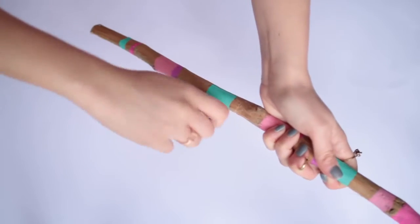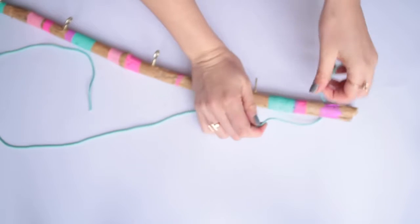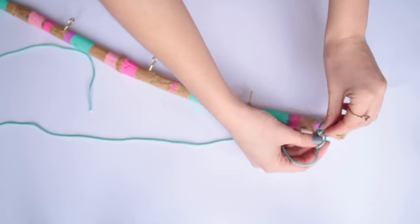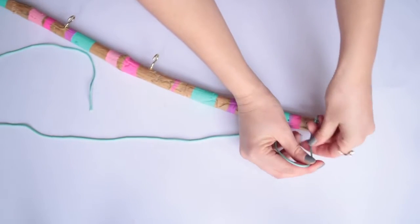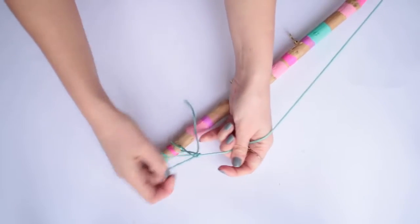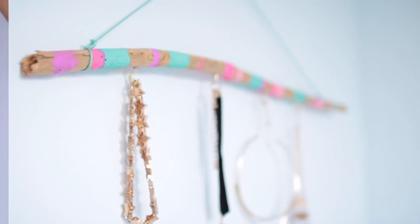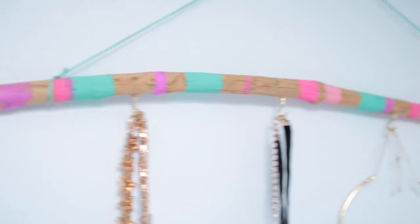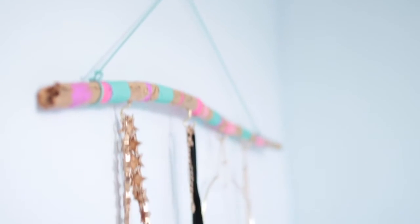Then once it's dry you can go ahead and screw in your hooks and then once you've done that you can also add a piece of string to the top. I'm using some paracord and I'm just tying this in a double knot at the end and then hanging it from a command hook on the wall. And that's it. It's very simple and it's very cheap to make because obviously driftwood is free and string and hooks are things you might find around your house.